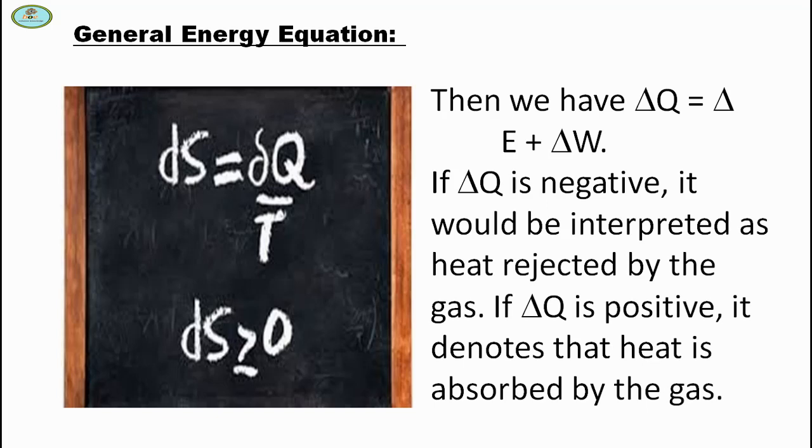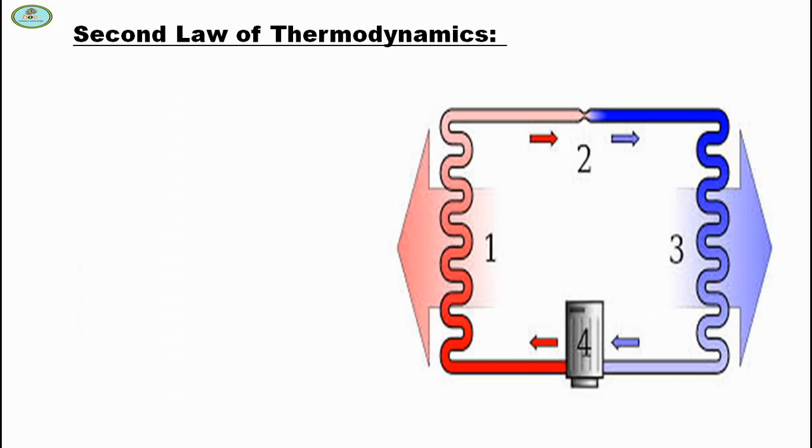If delta Q is positive, it denotes that heat is absorbed by the gas. This is the general form of the first law of thermodynamics.